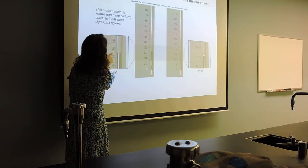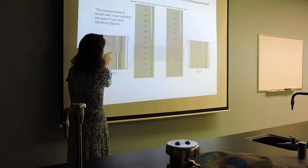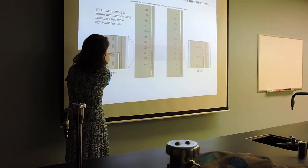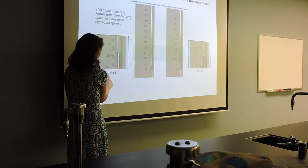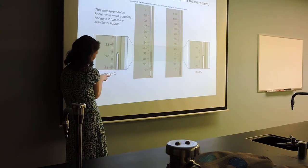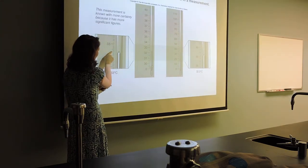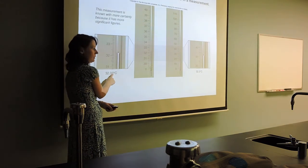There's 32.2, .4, .6 — excuse me — 32.1, .2, .3, .4, .5. So that's 32.1 for sure. It's somewhere between 32.2 and 32.3 — that's approximately what they are. So we're confident it's 32.3, and then it's somewhere between .3 and .4, so that last value is the one that's estimated. Always.